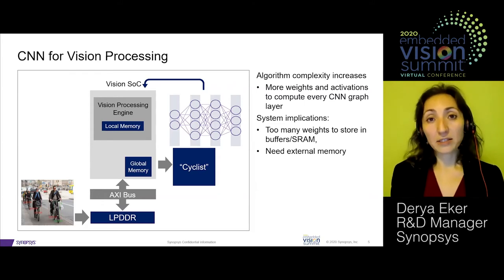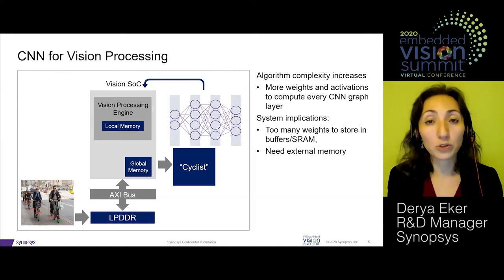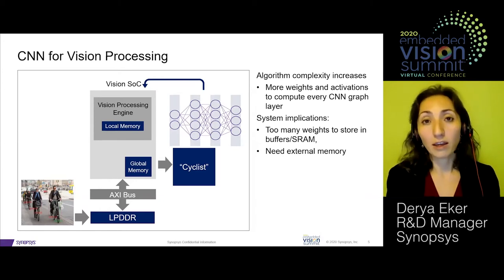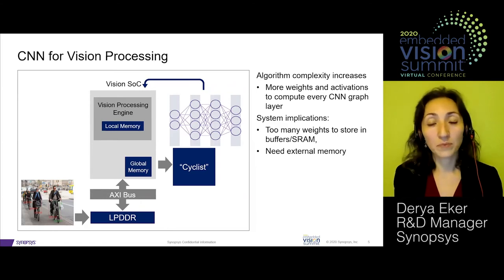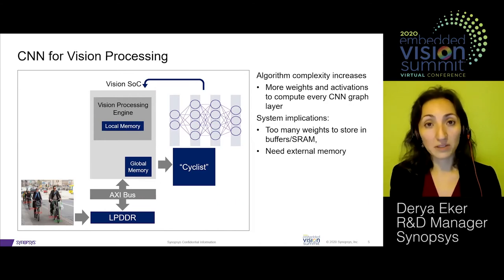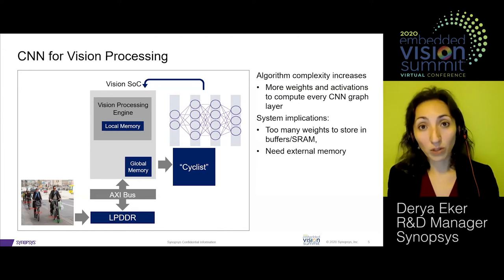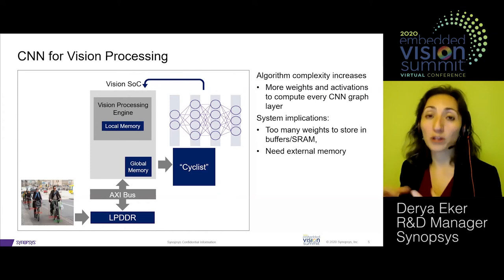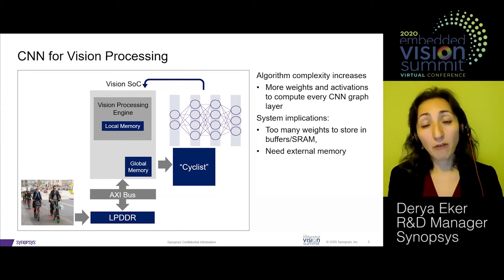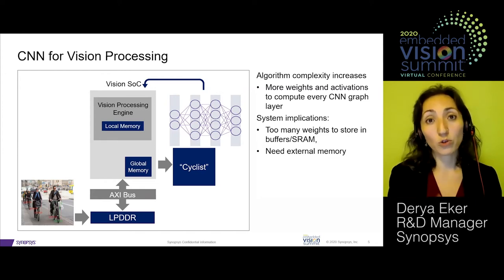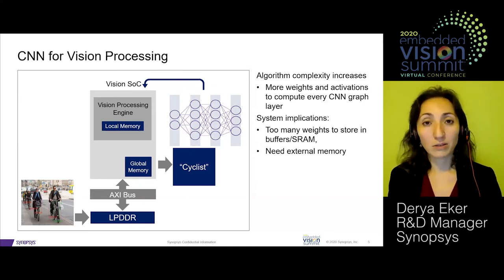As algorithm complexity increases, the amount of weights and activations to be computed per CNN graph layer also increases. This means you may not be able to store all data in local memories and might need on-chip SRAM or DRAM, requiring more accesses to external bus and memory with power implications. Alternatively, you can increase memory size to fit more weights locally and reduce external memory accesses, but this increases area and cost—so you must make trade-offs between cost, power, and bandwidth.